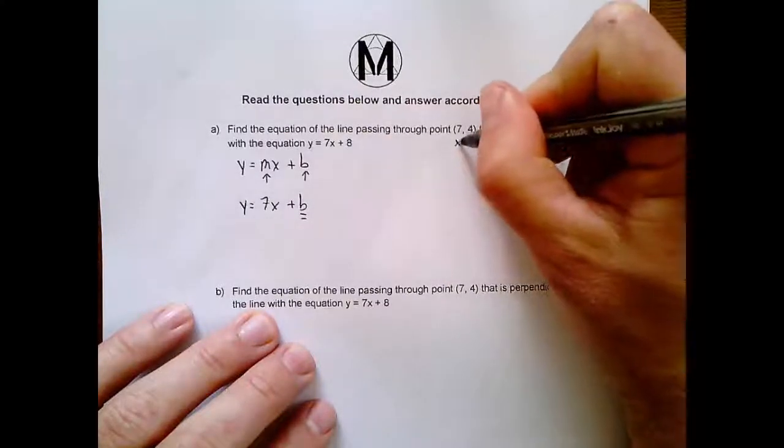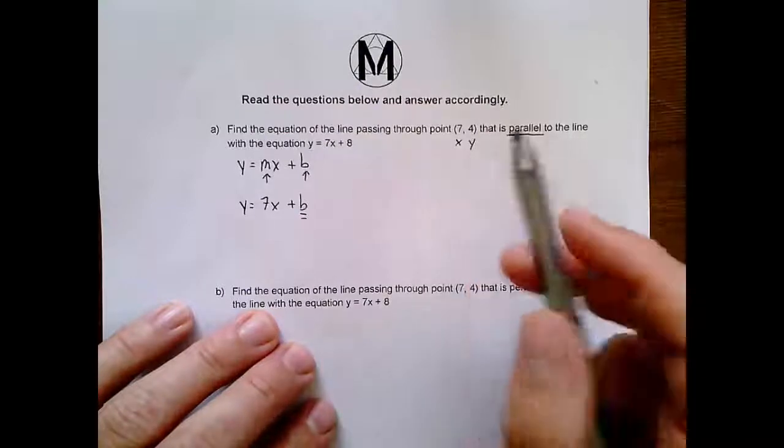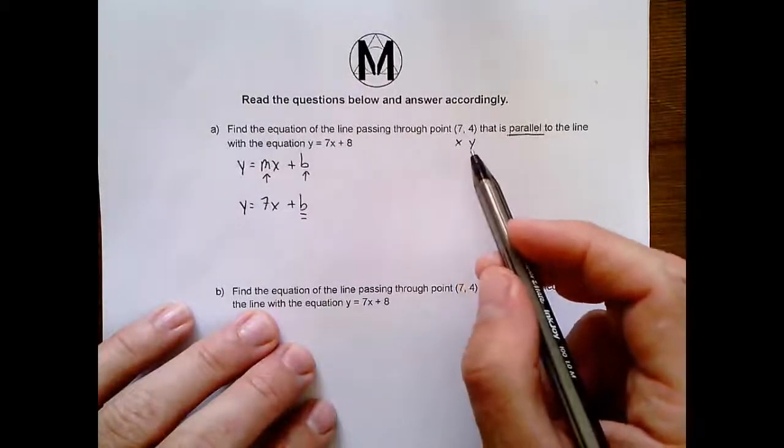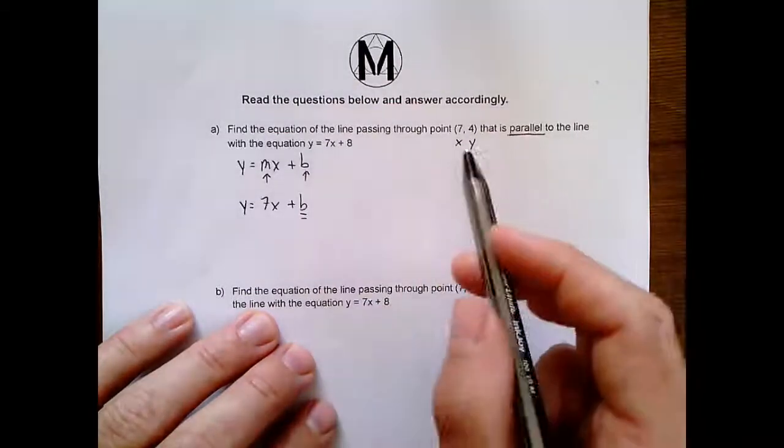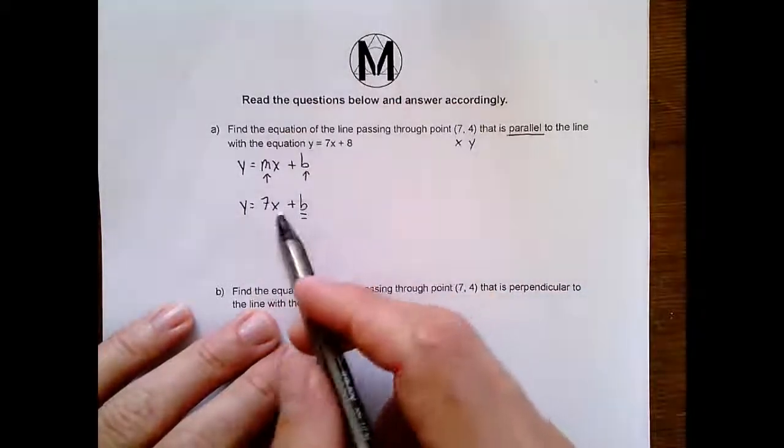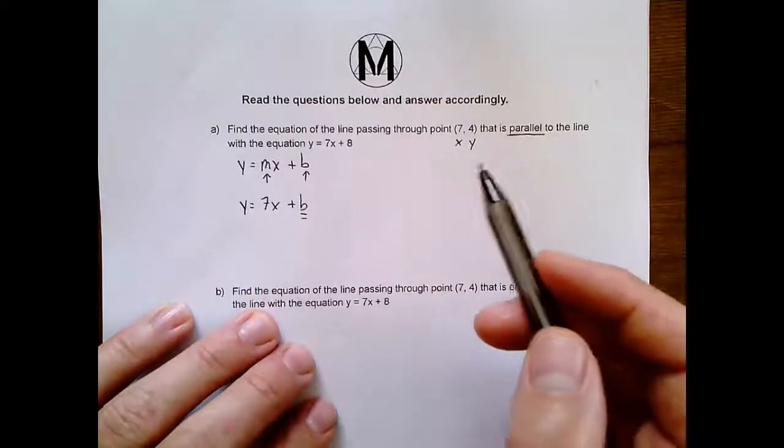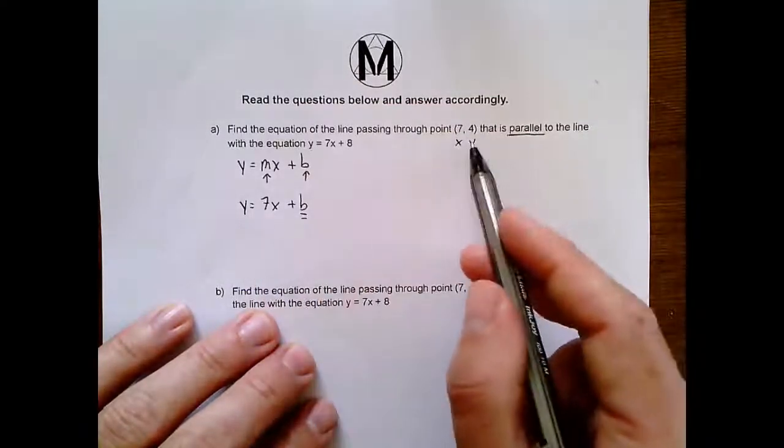This is an x and this is a y, right? So we know it's going to pass through this x, y point. And so we can literally just put those x's and y's into here because it's saying at some point on this line, x will be 7 and y will be 4. So I'm just going to plug in those x's and those y's.